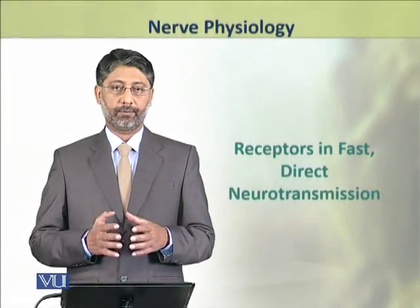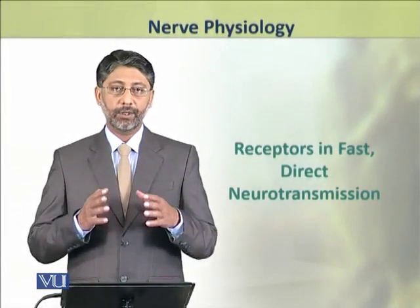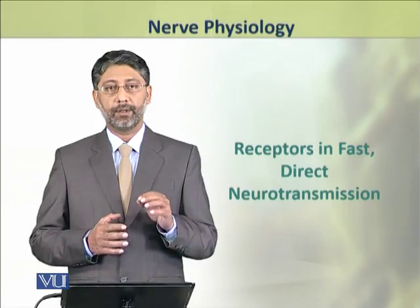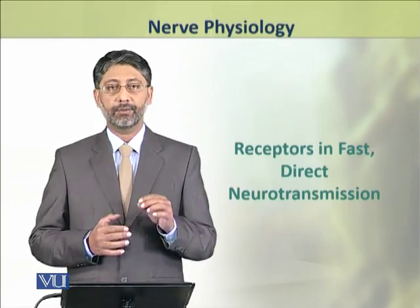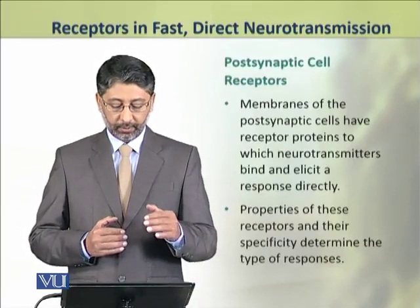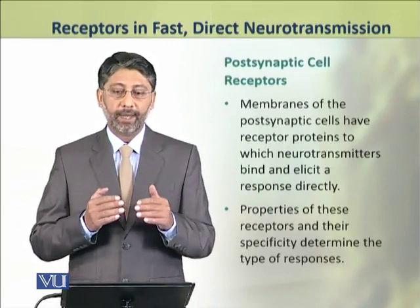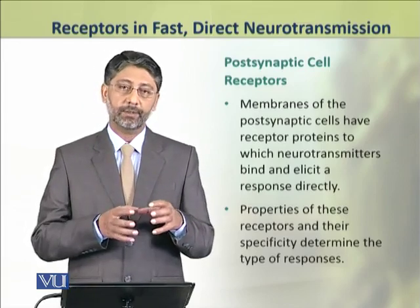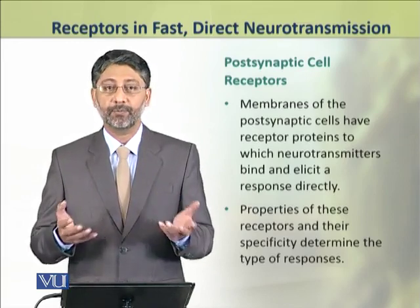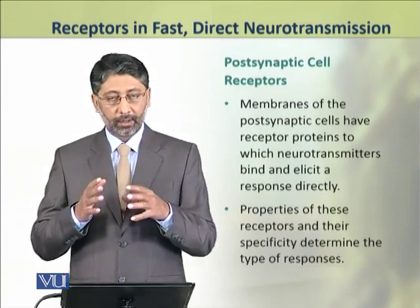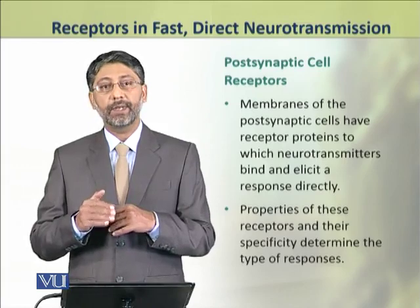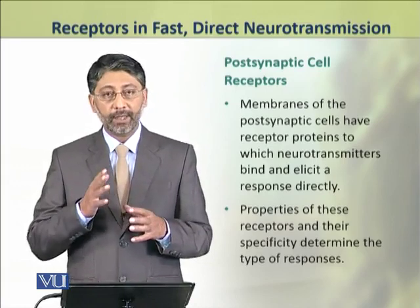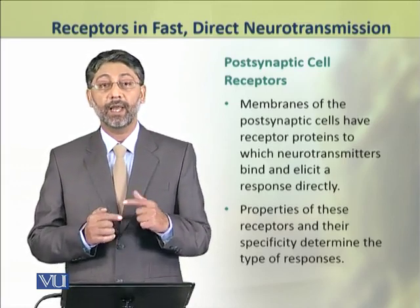Dear students, in this topic we shall discuss the receptors involved in fast and direct neurotransmission. The membranes of postsynaptic cells have receptor proteins to which the neurotransmitters bind and elicit response. Such response is produced directly. The properties of these receptors and their specificity determines the type of response.